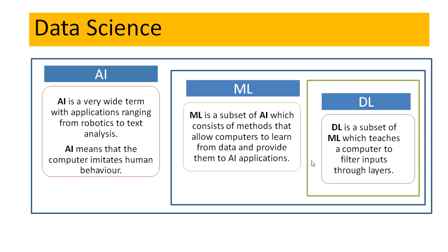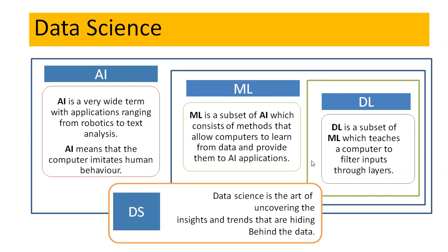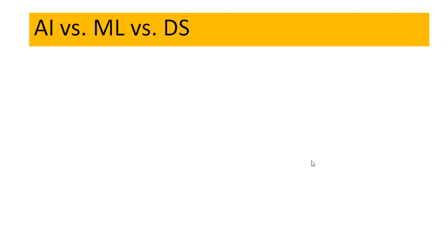Data science is the art of uncovering the insights and trends that are hiding behind the data. It is a process — the process of collecting the data, preparing the data for analysis, analyzing the data using statistical methods, visualizing the data, and so on. Now let us understand the difference between these terms: artificial intelligence, machine learning, and data science.